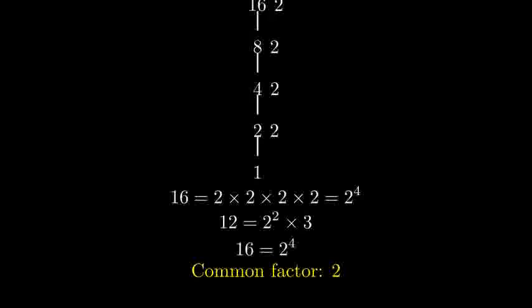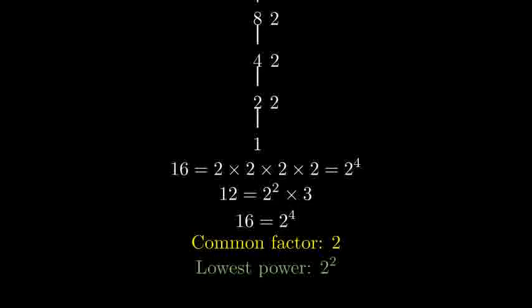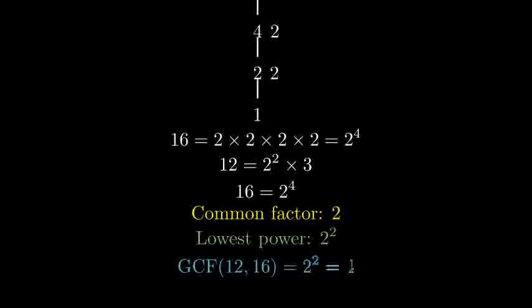To find the GCF, we use the common prime factors with the lowest power. 2 appears twice in 12 and 4 times in 16, so we'll use 2 squared. Therefore, the greatest common factor of 12 and 16 is 2 squared, which equals 4.